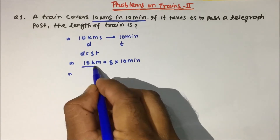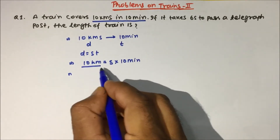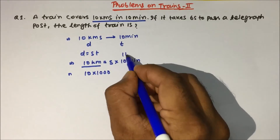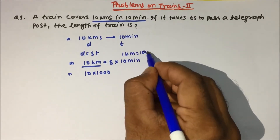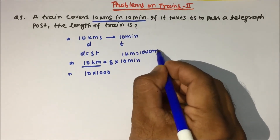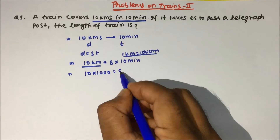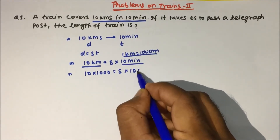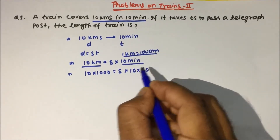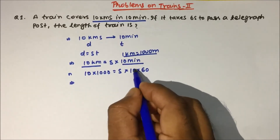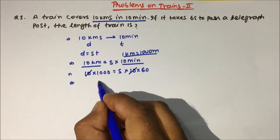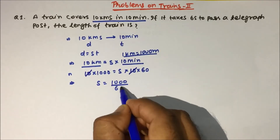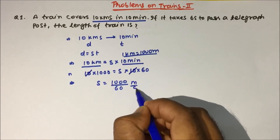We convert 10 kilometers into meters: 10 × 1000 = 10,000 meters. Time is 10 minutes, and since 1 minute = 60 seconds, 10 minutes = 10 × 60 seconds. The 10s cancel, so speed s = 1000 ÷ 60 meters per second.